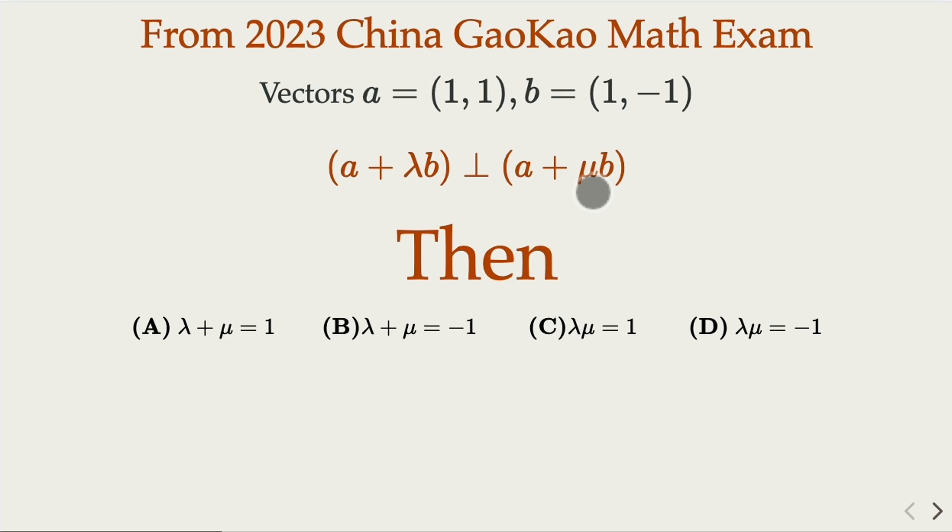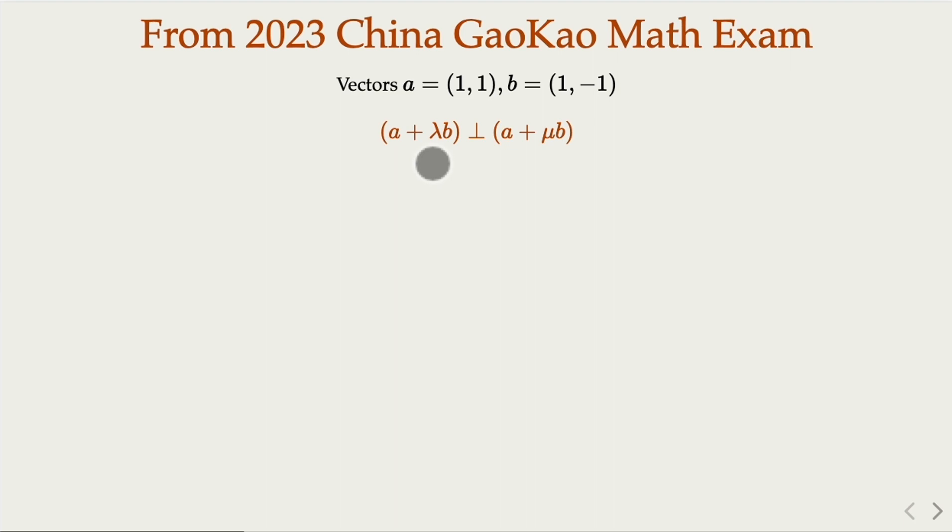So a plus lambda b is going to be 1 plus lambda, 1 minus lambda, because b is 1 minus 1.